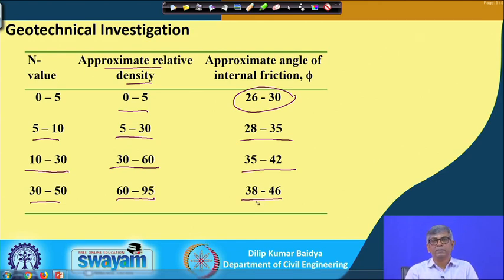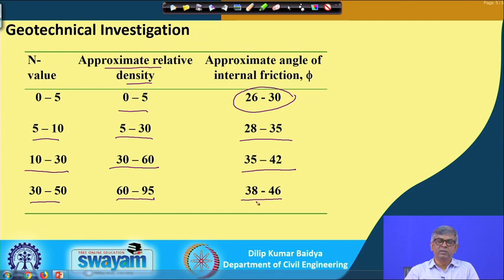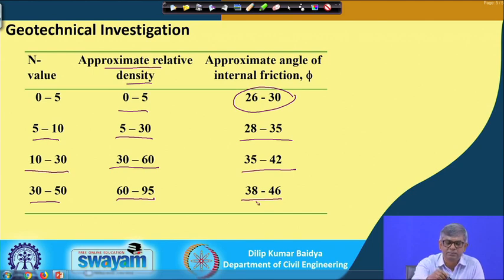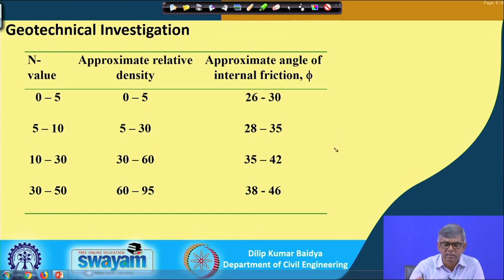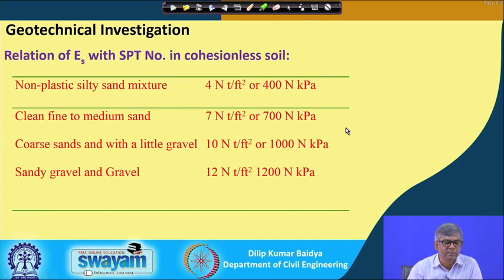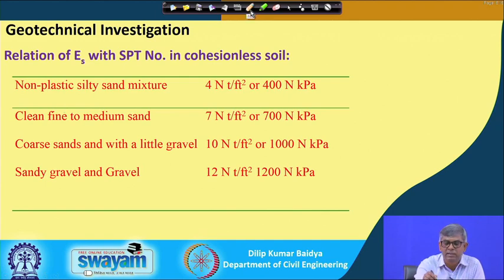If the N value exceeds 50, it is generally considered refusal — the soil may not be there and it may be rock. So beyond 50, SPT refusal means that depth is not suitable for standard penetration testing. Similarly, correlations exist between SPT number and Young's modulus E for different soil types. You can see that for non-plastic silty sand mixtures, E can be estimated from an empirical equation based on N.